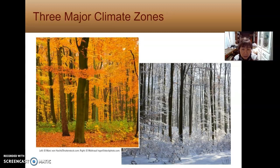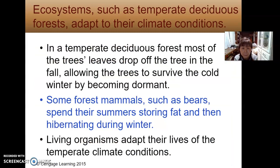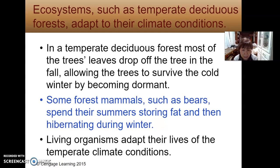Pictures show the seasons — summer and winter — meaning living things have adapted to those seasonal changes. In a temperate deciduous forest, most of the tree's leaves drop off in the fall, allowing the trees to survive the cold winter by becoming dormant. Some forest mammals, such as bears, spend their summers storing fat and then hibernating during winter. Living organisms have adapted their lives to temperate climate conditions.